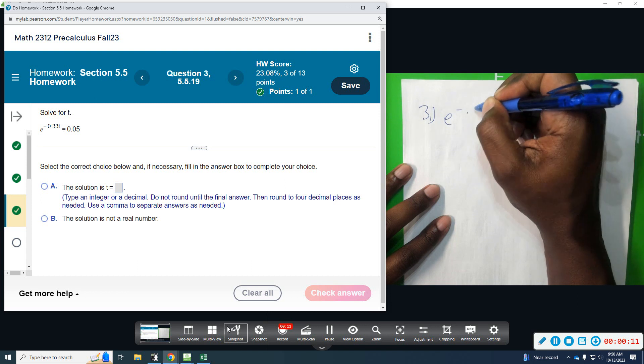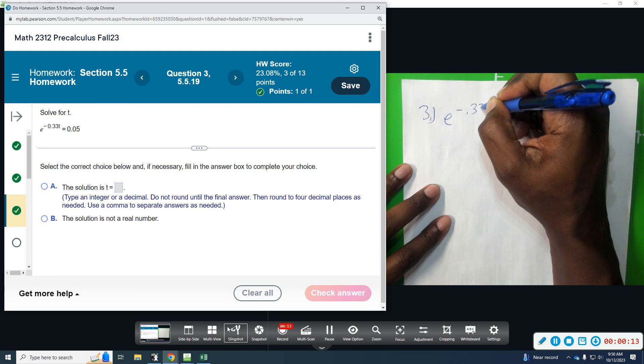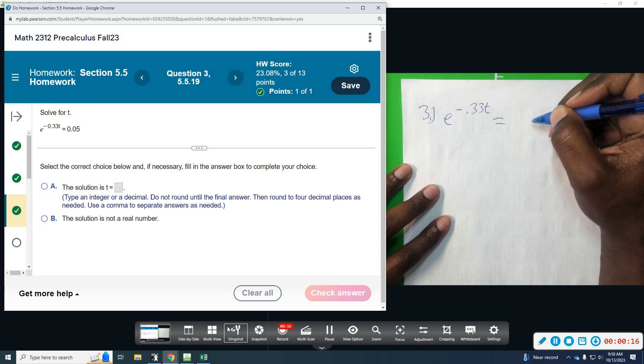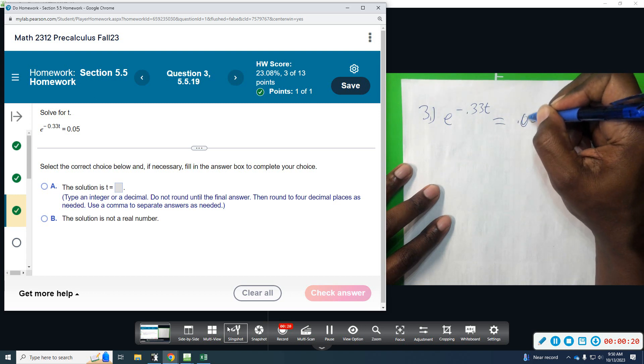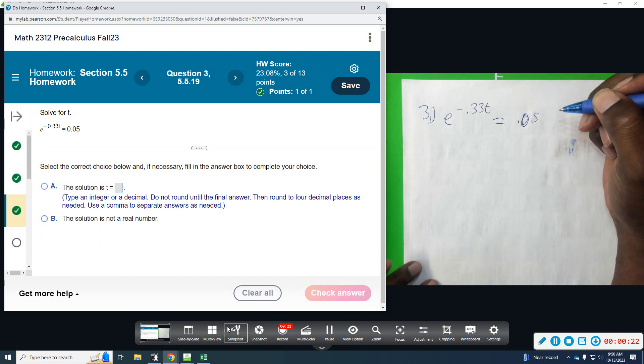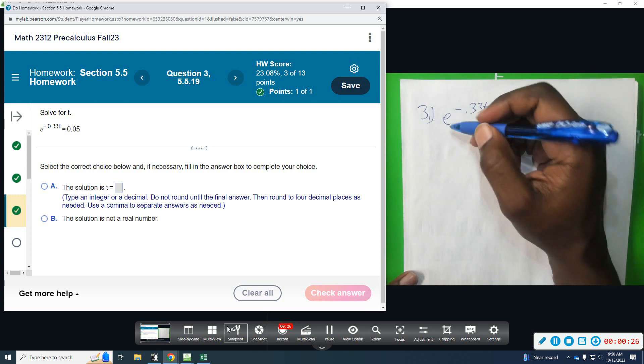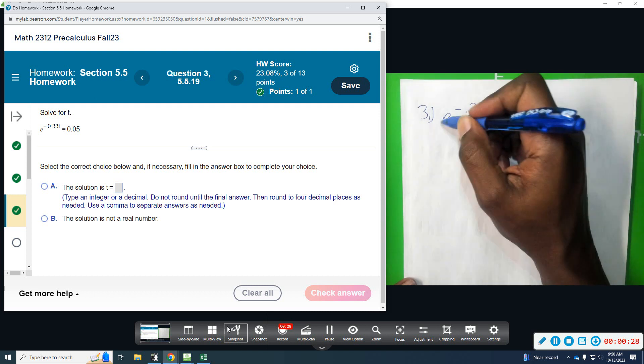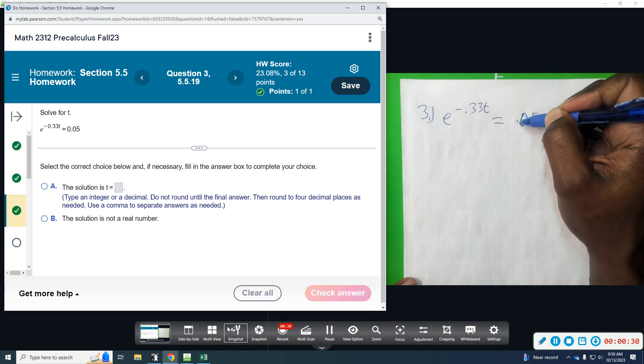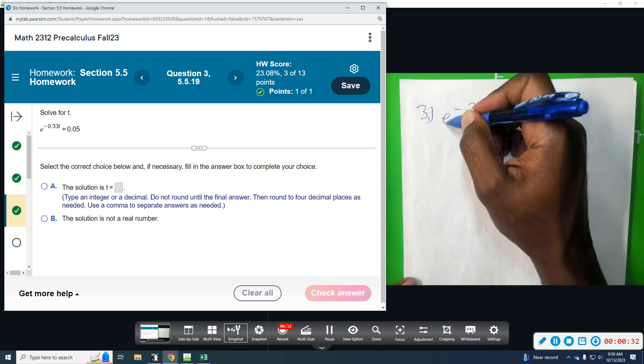Negative 0.33t equals 0.05. Okay, so in class we've talked about writing exponential as a log and vice versa. I mentioned the base is kind of like a swinging pendulum. So if you move the base over, you add the log. If you add a log and you move the base over, you lose it.